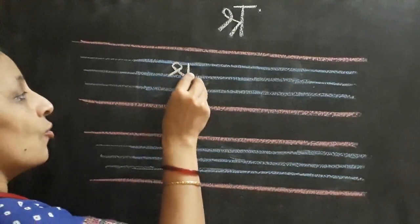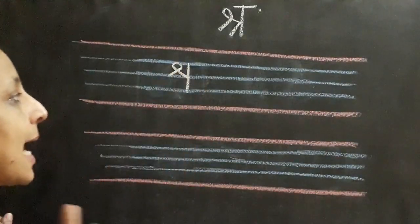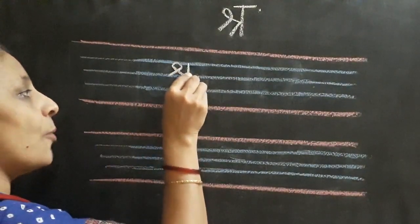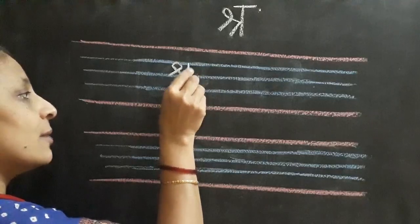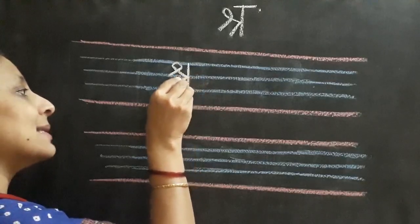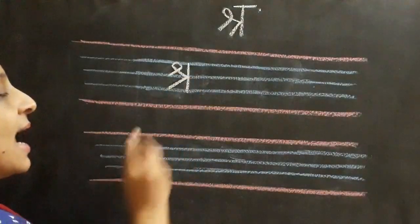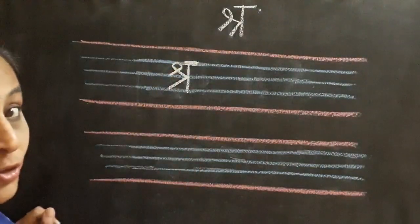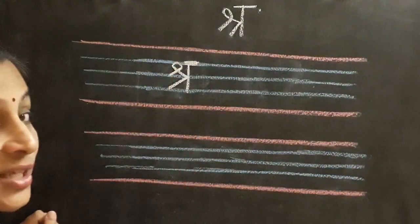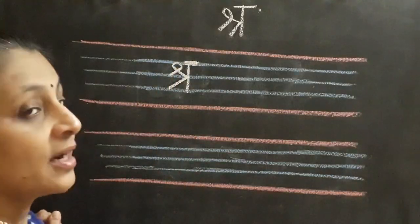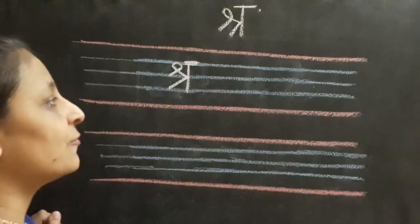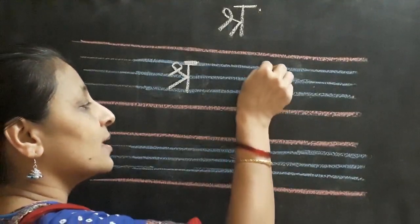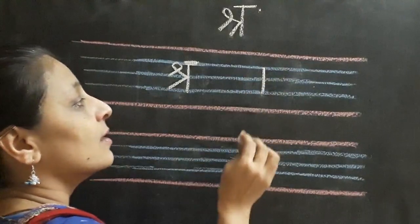Now we are going to draw another slanting line down from this middle point. From the second blue line, I am going to draw one slanting line down and a sleeping line over here. So this way we are going to write Vyanjanshra. Shra se shramik. Now children, please see carefully because we are going to write in our notebook.